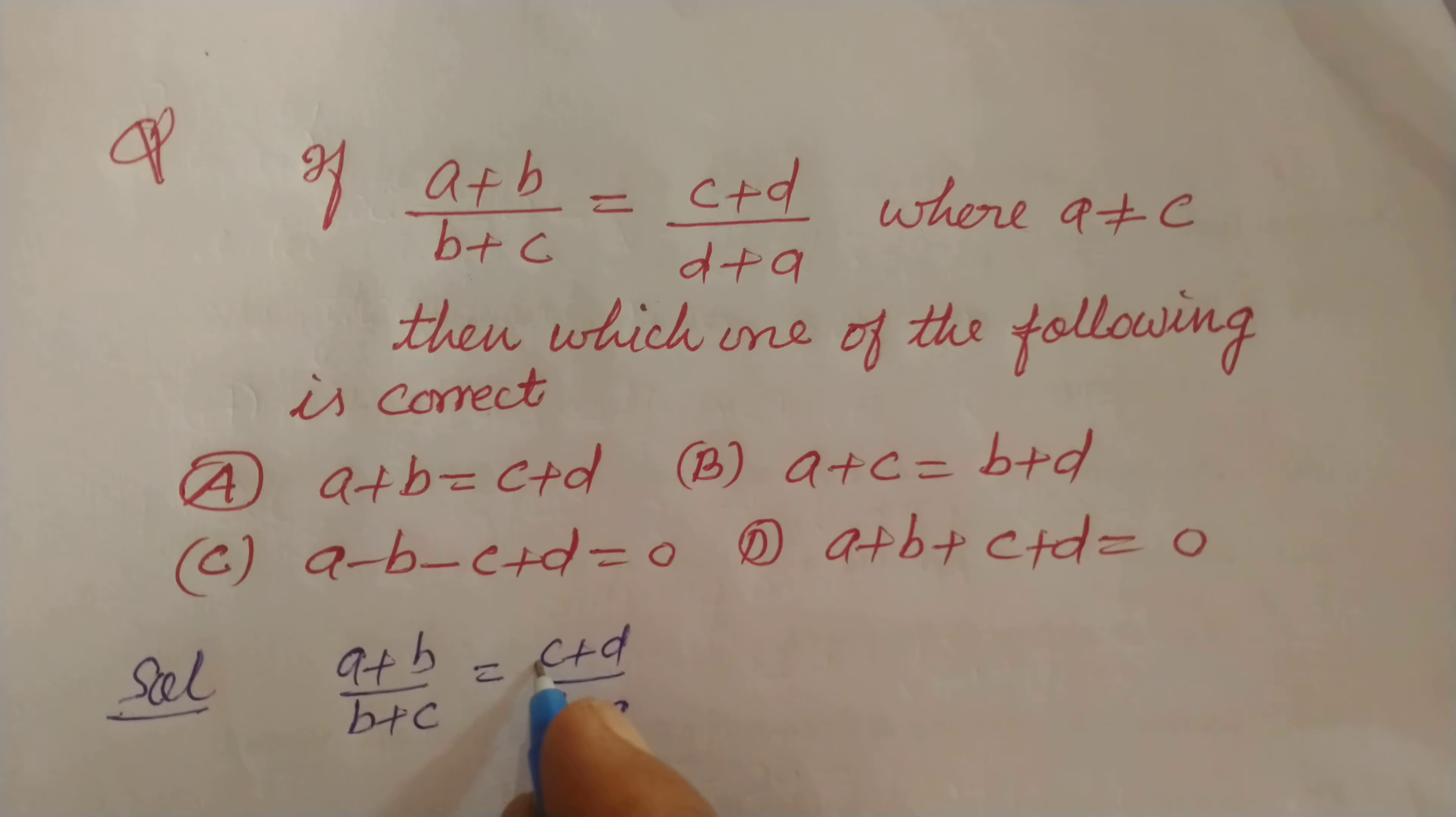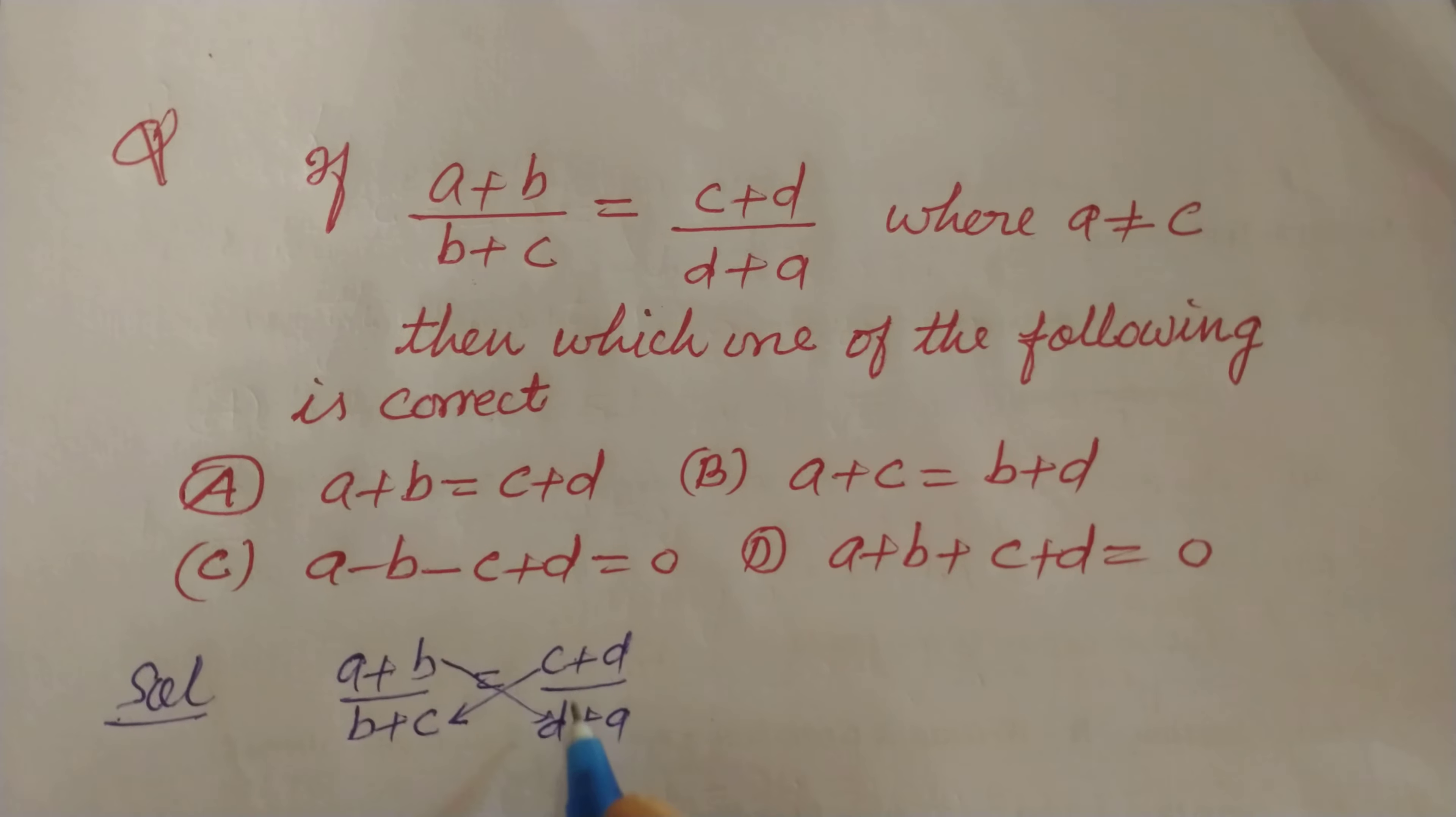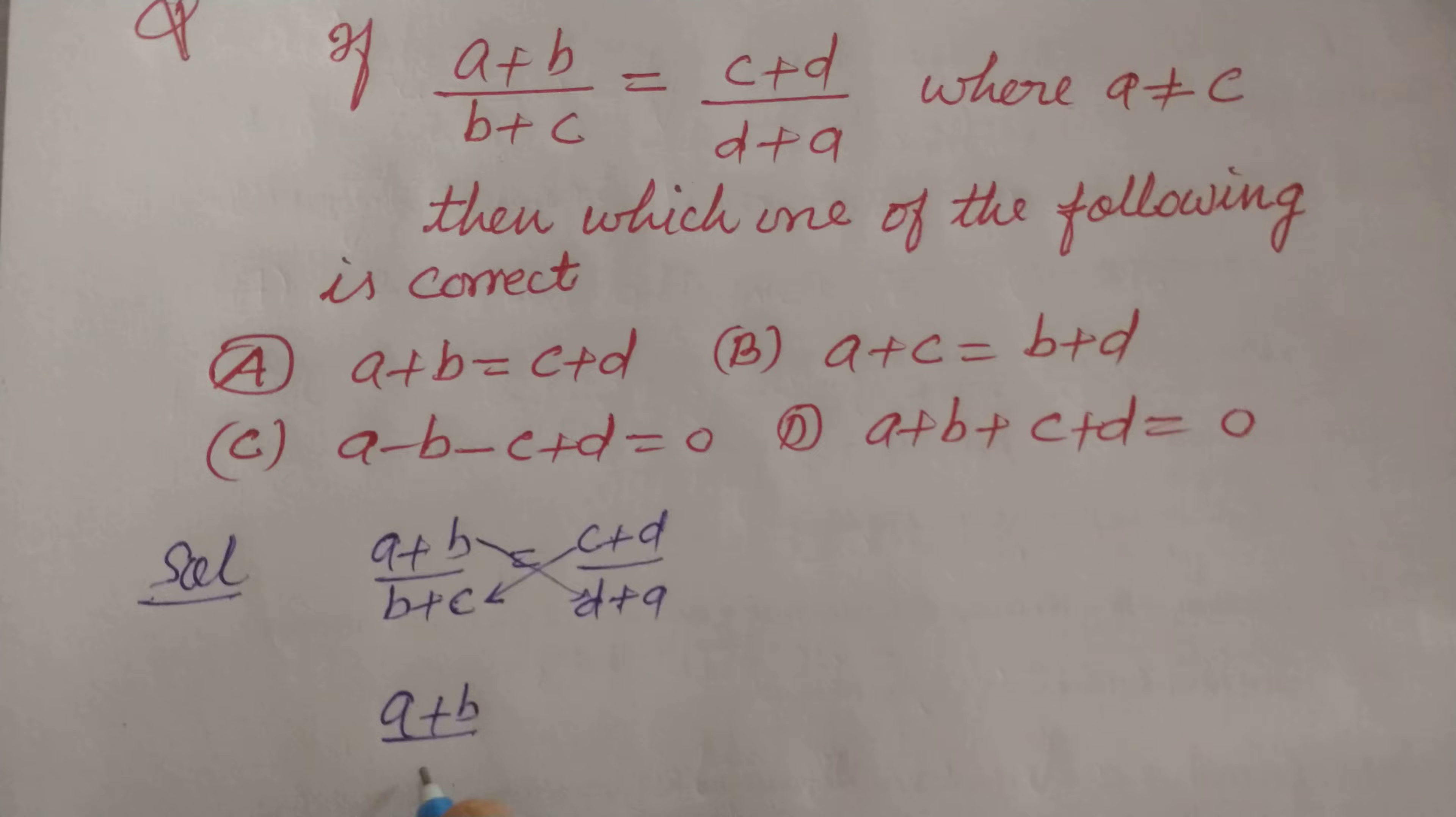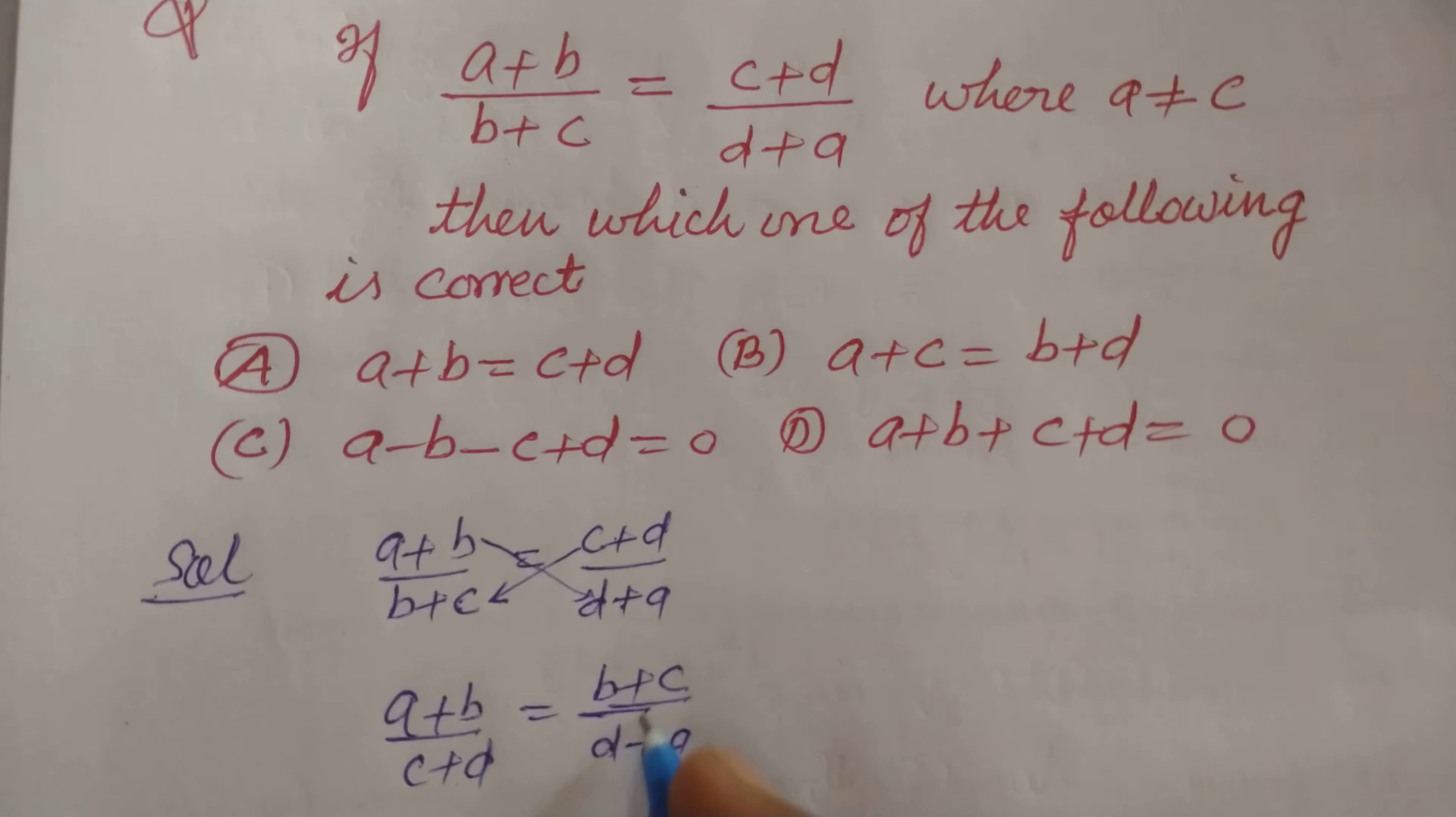Now we change the ratio. Here first term, this is second term, fourth term, third term. So we change the second and third terms. Therefore (A + B)/(C + D) = (B + C)/(D + A).